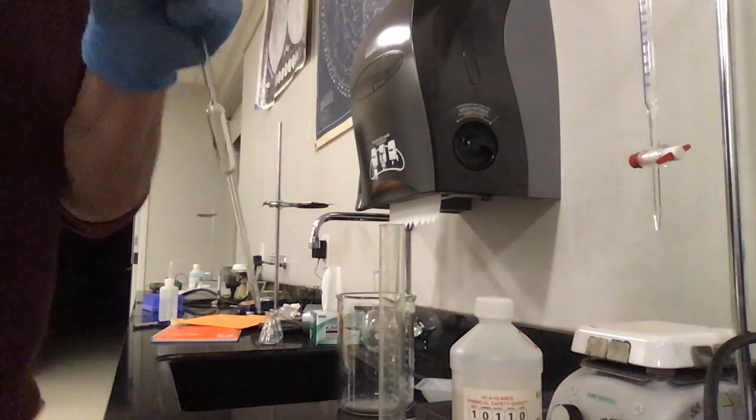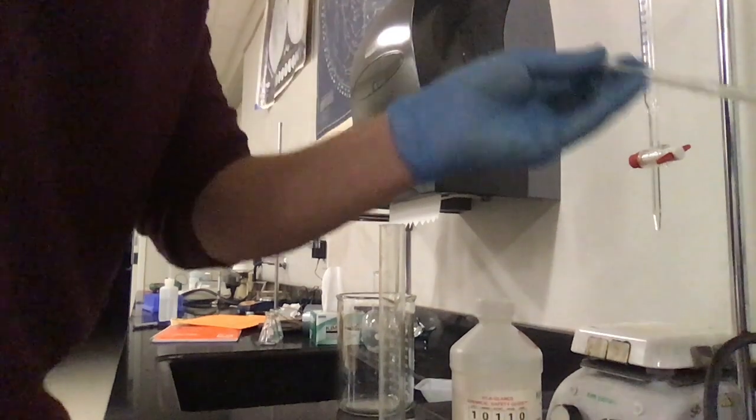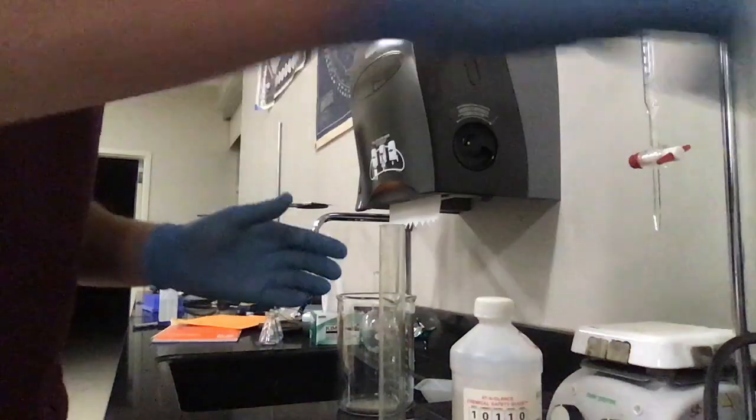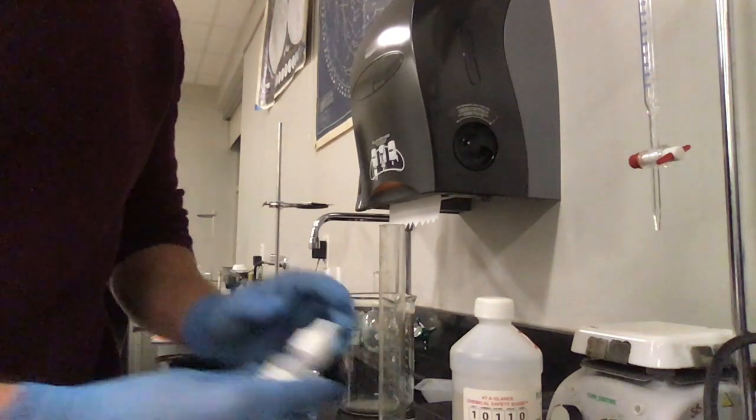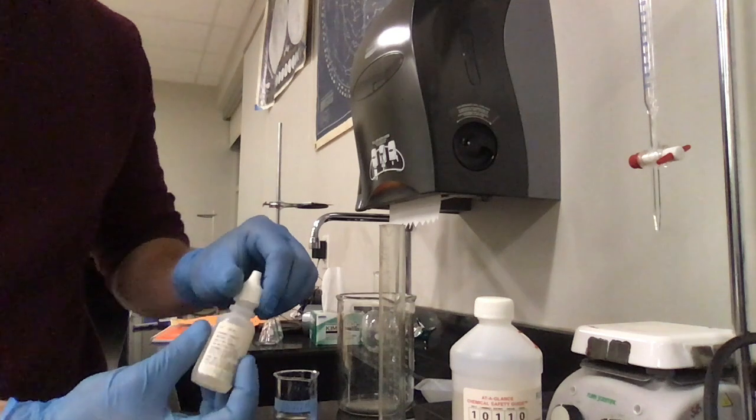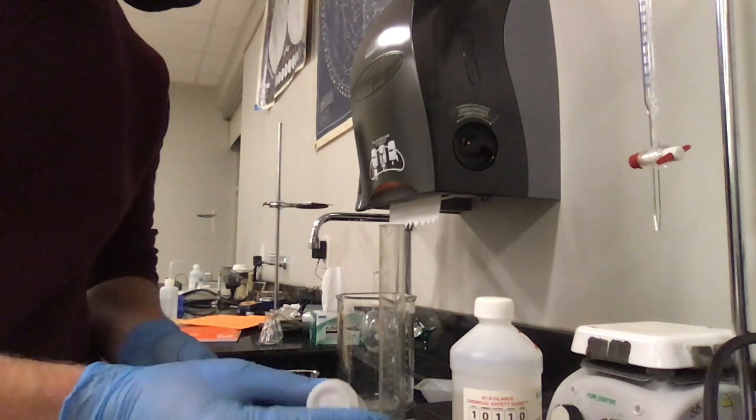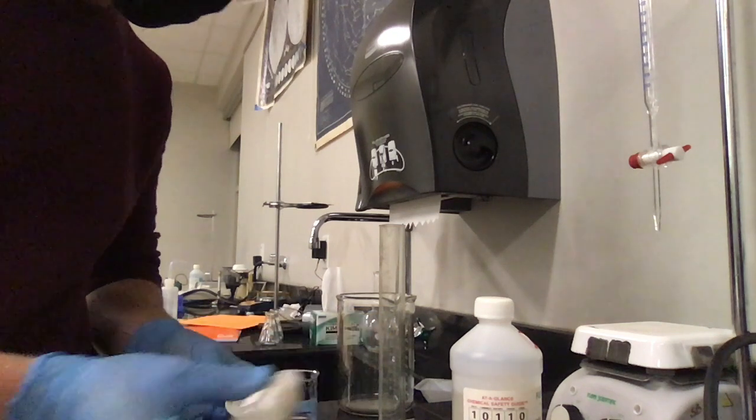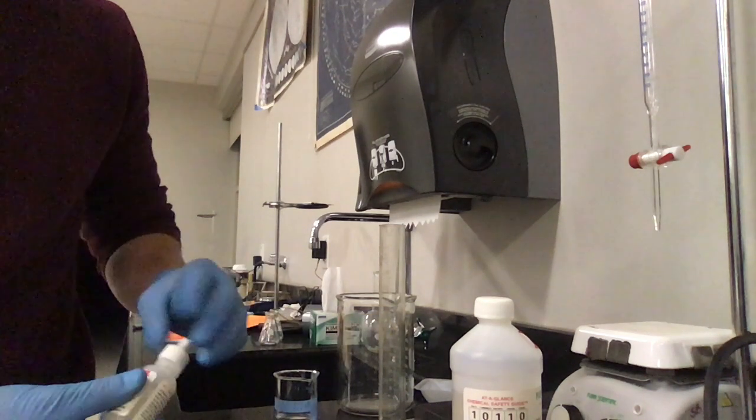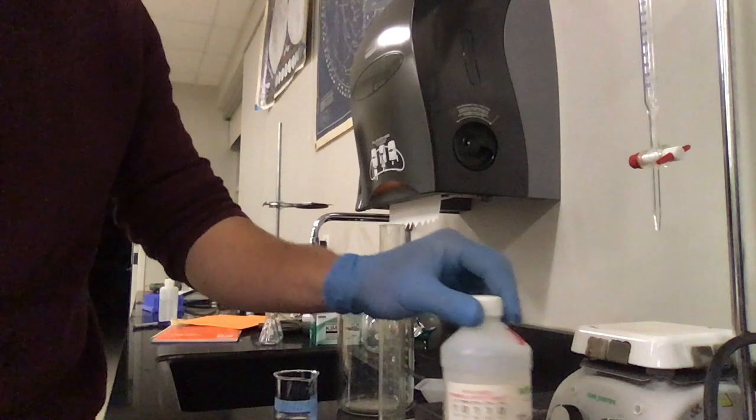I'm going to set this aside because we're going to use it again because I'm going to do three trials for this particular lab. Okay. Now I have unknown acid inside of my Erlenmeyer flask. I'm going to add a drop or two of my indicator. Don't forget the indicator. You'd be amazed. Unsurprisingly, it is still transparent.